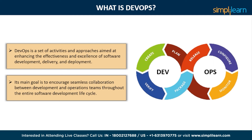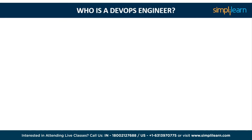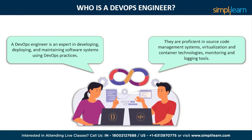Let's explore who is a DevOps engineer. A DevOps engineer is an expert in developing, deploying, and maintaining software systems using DevOps practices. They work closely with IT operations, developers, and stakeholders to ensure efficient software delivery. The responsibilities include implementing automation, continuous integration, and continuous delivery or deployment practices, as well as resolving issues throughout the development process. DevOps engineers are proficient in various tools and technologies, such as source code management systems, build and deployment tools, virtualization, and container technologies.